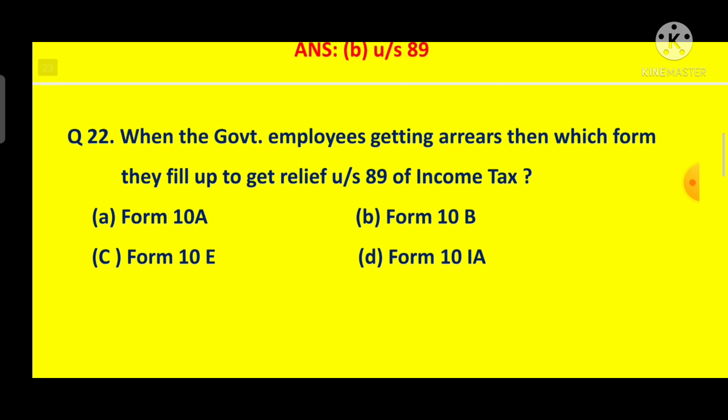Question No. 22: When government employees receive arrears, which form do they fill up to get relief under Section 89 of Income Tax? You need to download Form 10E from the income tax website. Now it is filled online on the income tax site. After filling Form 10E online, you will get relief under Section 89. Answer is C, Form 10E.